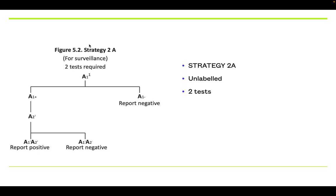Strategy 2A is required for community surveillance and is an unlabeled study. Epidemiologists take random, unlabeled samples and test for HIV. If the first test is negative, it is considered negative. If positive, a second test is done. If both are positive, it is considered a positive result. If the first is positive but the second is negative, it is considered negative. This is for population-level surveillance, not for diagnosis of a specific person.